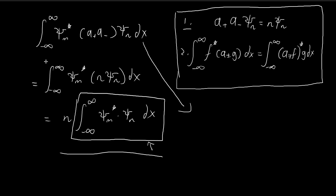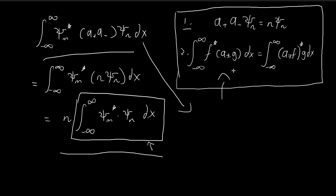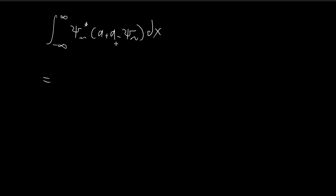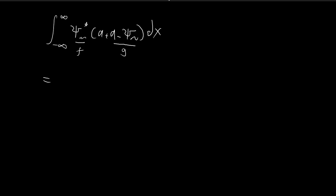Another way to rewrite this integral is to use the second property that we've proved. We're going to start off with the same integral: the conjugate of a-plus a-minus ξ_n dx. Now we're going to use the second property. In this case, I'm going to treat a-minus ξ_n as our g, and ξ_m will be our f. So you have your f — its conjugate, which is ξ_m — and a-minus applied to ξ_n will be your g.